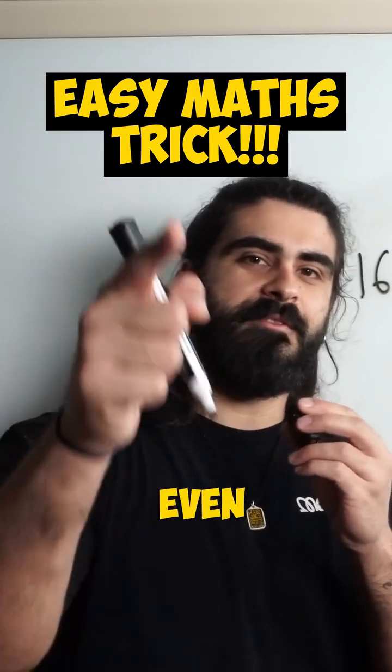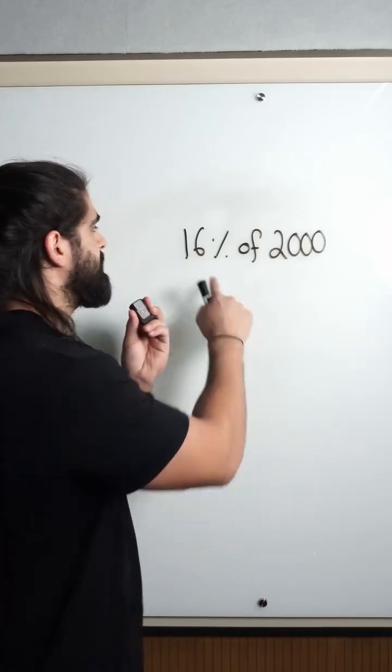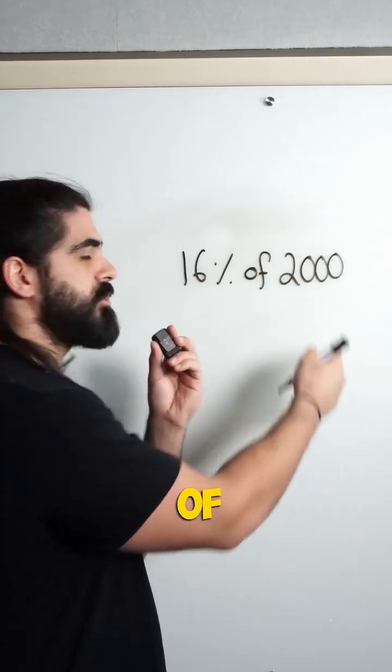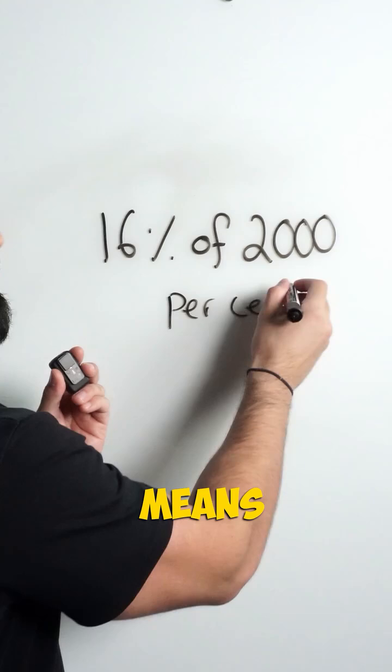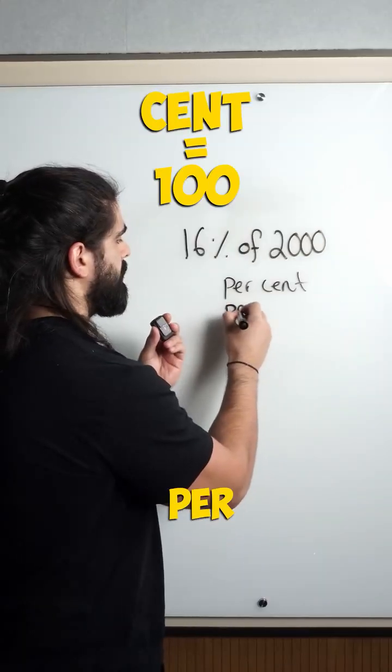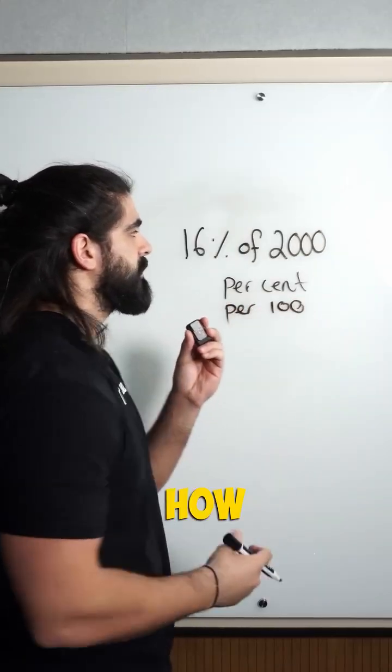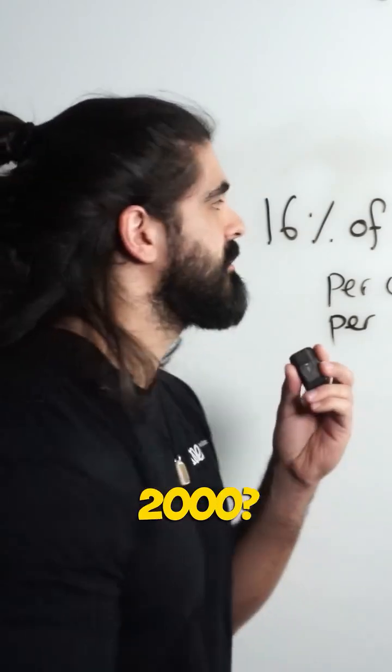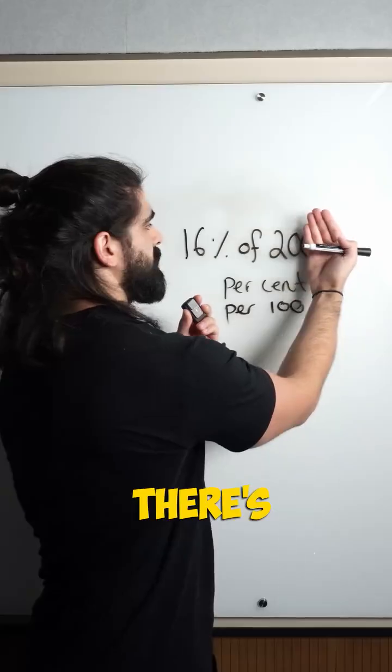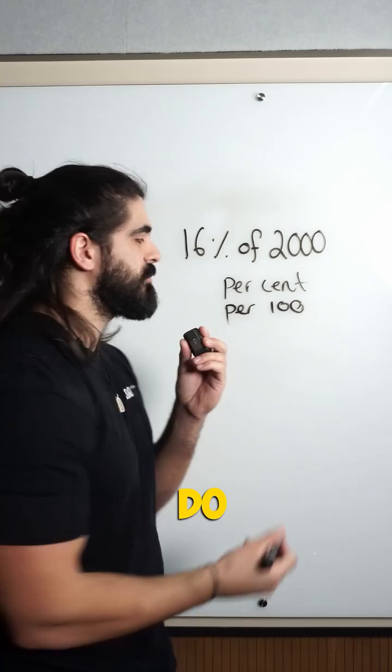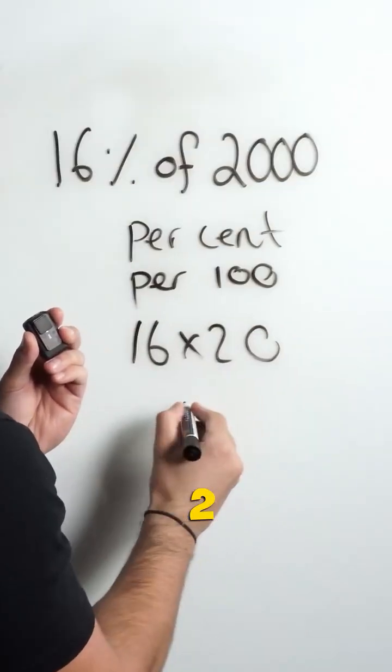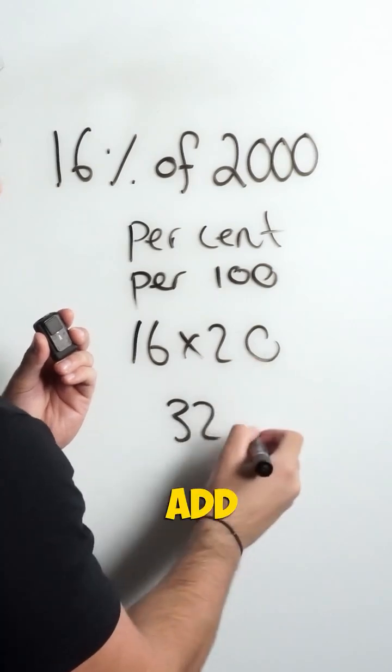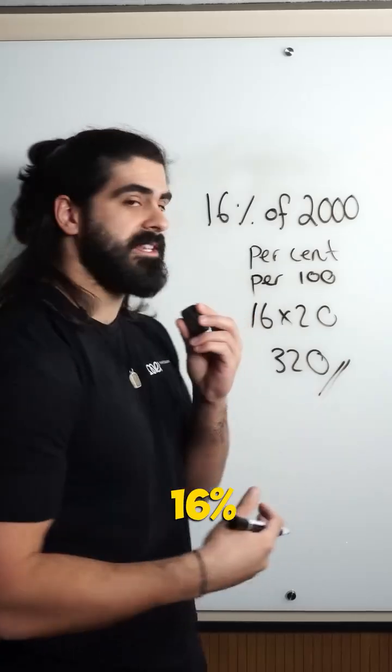Do you know what percent even means? Check out this question: 16% of 2,000. Percent means per 100, so it's saying per 100. How many hundreds are there in 2,000? You just cover two zeros, there's 20 of them. So all you need to do is 16 times 20. 16 times 2 is 32, add a 0, that is 320.